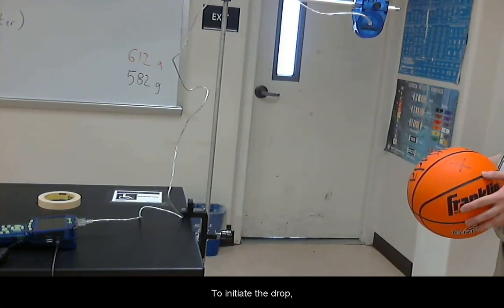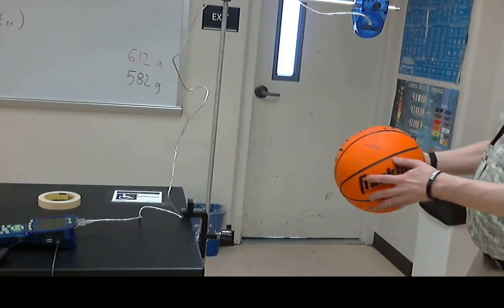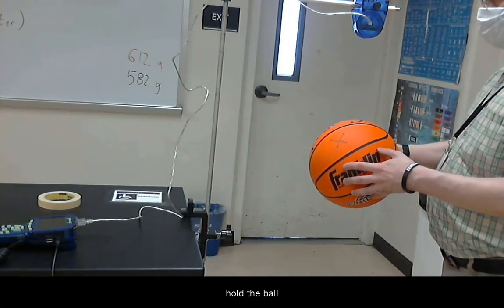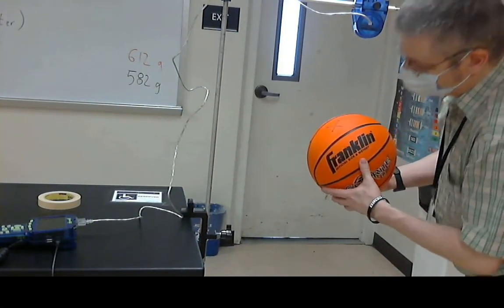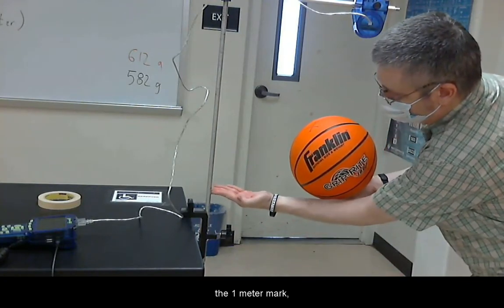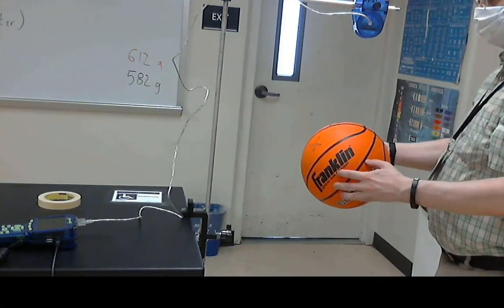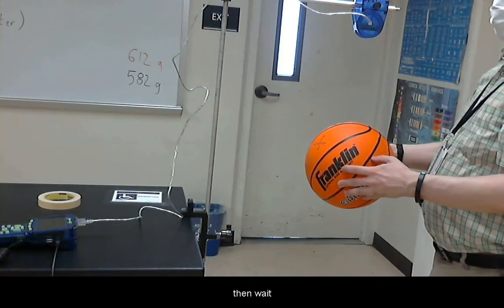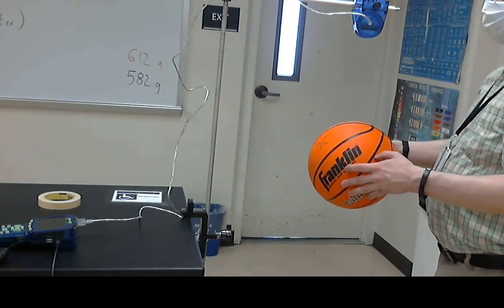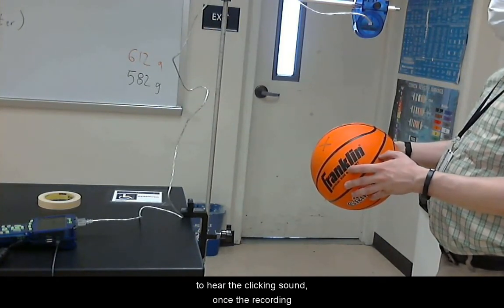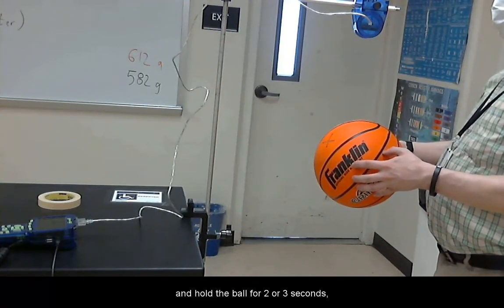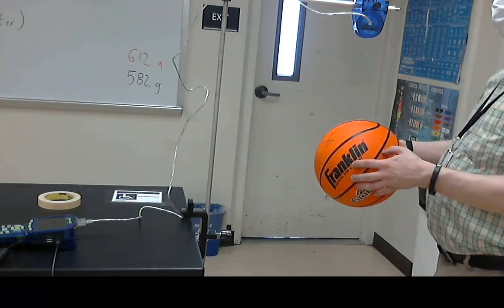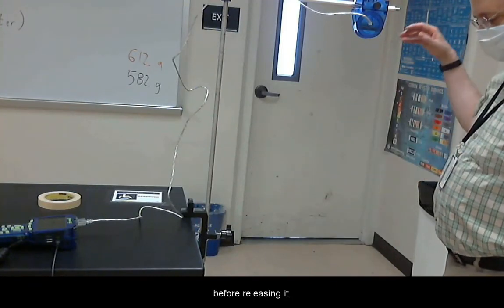To initiate the drop, hold the ball perfectly underneath the motion sensor at the one meter mark. Then wait to hear the clicking sound once the recording starts, and hold the ball for two or three seconds before releasing it.